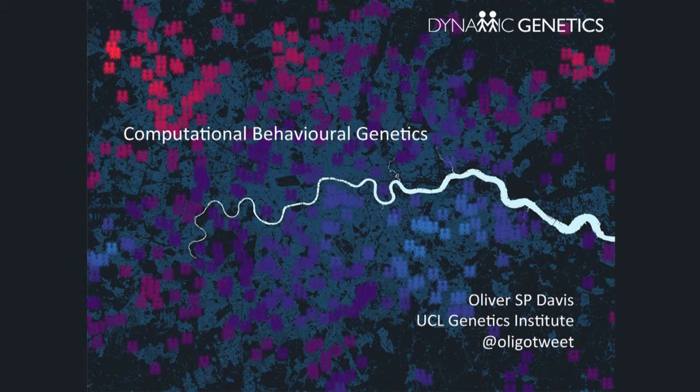It's fascinating that almost any human characteristic you can think of — from diseases all the way through to behaviours — shows some genetic influence. Today I'm going to talk about two projects from my lab that use the techniques of computational social science to try to understand how genes and environment interact in human behaviour.